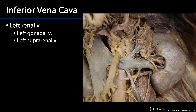Let's take a closer look. Here's our IVC and here is our left renal vein. We're receiving blood from the left kidney, also from the left gonad, and from this common trunk from the left hemidiaphragm as well as the left suprarenal gland.